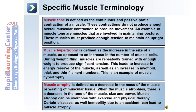Muscle atrophy is defined as a decrease in the mass of muscle or a wasting of muscular tissue. When the muscle atrophies, there's a decrease in the tone of the muscle, the size of the muscle, and the power that muscle can produce. Muscle atrophy can be overcome with exercise and physical therapy. Certain diseases, as well as immobility due to an accident, can lead to muscle atrophy.